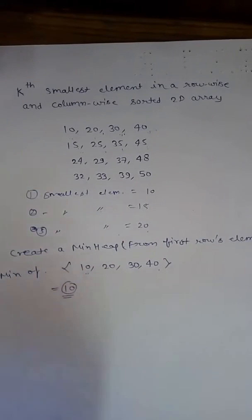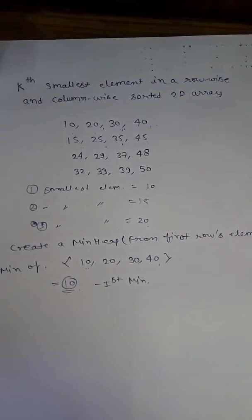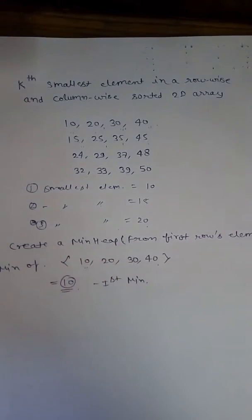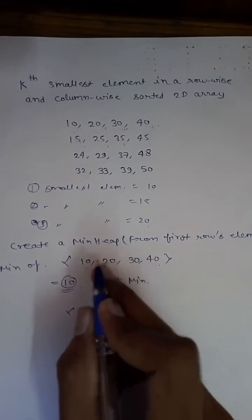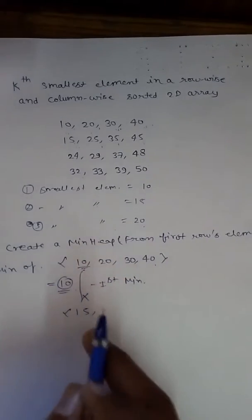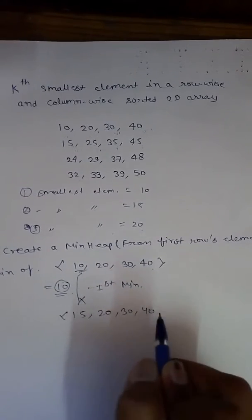If we take the minimum of all these elements, that gives us 10, which is our first minimum. Now, to find the second minimum, we already have the minimum of the other columns — 20, 30, 40. We need to find the next minimum possible in the first column, which is 15. So we remove 10 and insert 15.